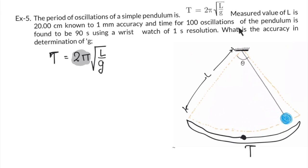And time for 100 oscillations of the pendulum is found to be 90 seconds. If it oscillates 100 times, then it takes 90 seconds. Using a wristwatch of 1 second resolution—resolution means accuracy, the minimum value it measures. So this is your delta T. Delta T is 1 second, and no problem here with units because this is also in seconds.